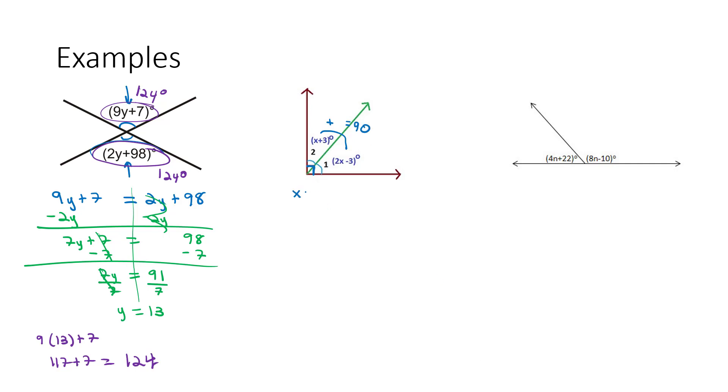So we're going to add them together. x plus 3, and we're going to add the 2x minus 3. That's going to equal 90 degrees because they are complementary angles. Now we just have to start solving for x. x plus 2x is 3x. 3 minus 3, that's nice. That comes out to 0, equals 90. Divide both sides by 3, and x is equal to 30, which is great.